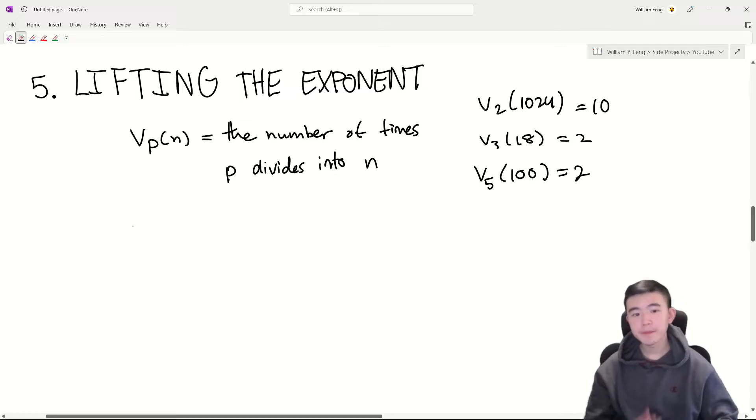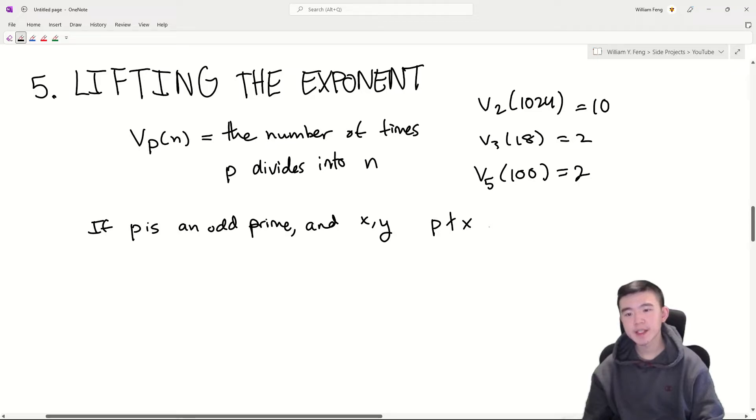It tells us that if p is odd, specifically an odd prime, then vp of x minus y, and x and y are integers such that p does not divide x and p does not divide y, but p divides x minus y, then vp of x to the n minus y to the n for a particular integer n is equal to vp of x minus y plus vp of n.